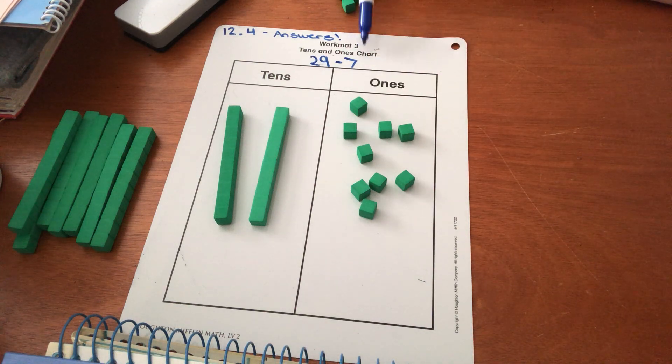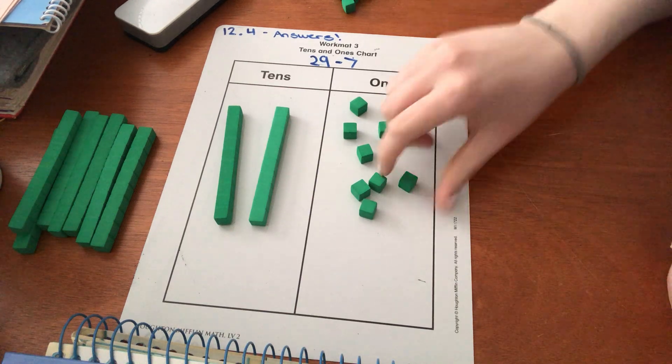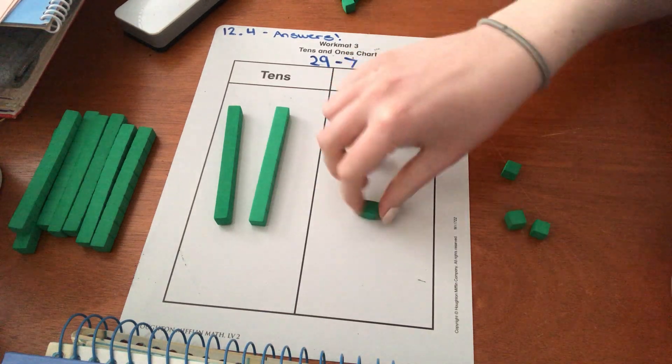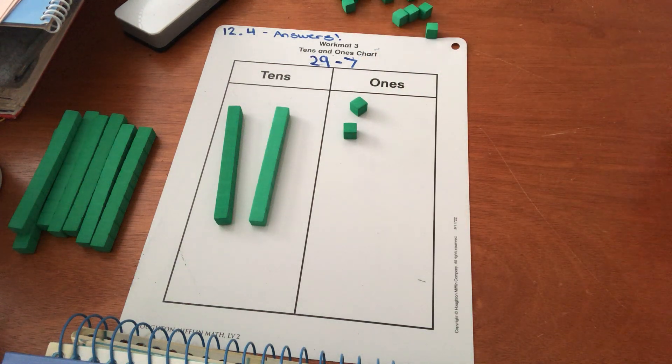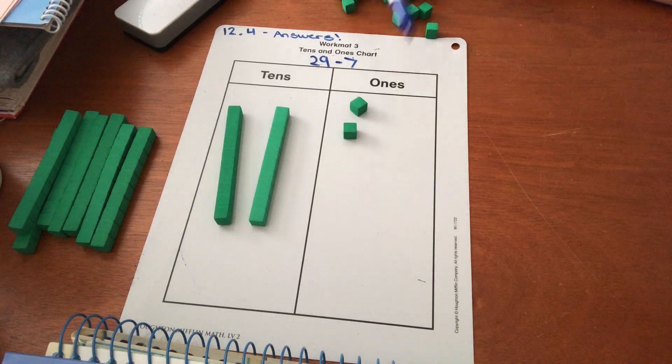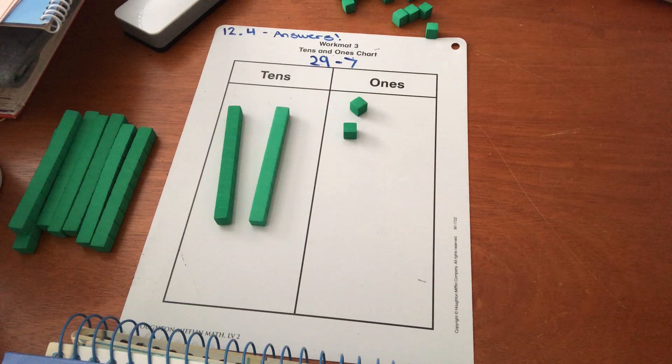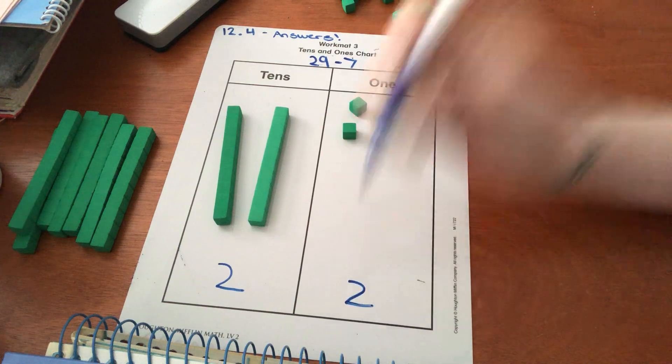Now we subtract the ones. Take seven away from the ones place. One, two, three, four, five, six, seven. Put those back over here. Cool beans. How many tens do I have here and how many ones do I have here? Nice. You got it. Two and two.